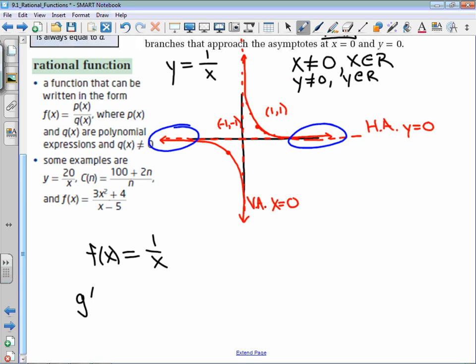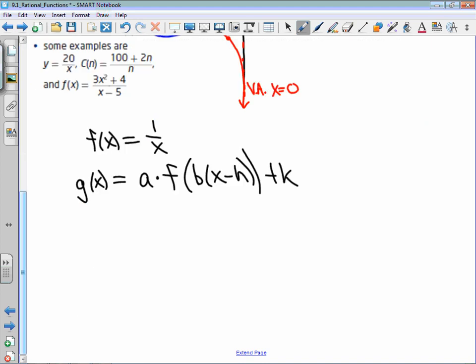So we'll say some transformed function g of x is a times the function evaluated at b times x minus h, and then plus k. If we apply that to this specific f of x, what we would have is that g of x is equal to a times 1 over b times x minus h, and then plus k on the outside.